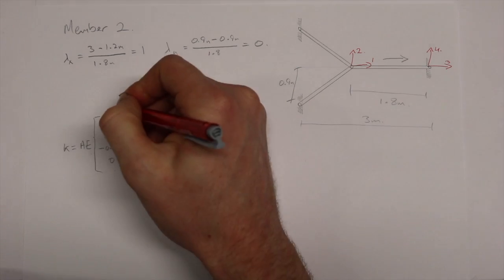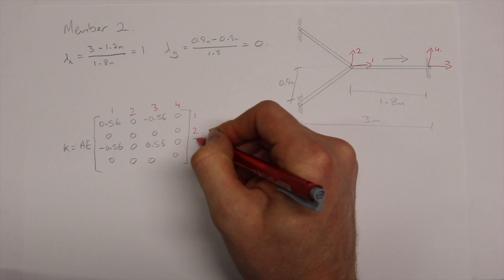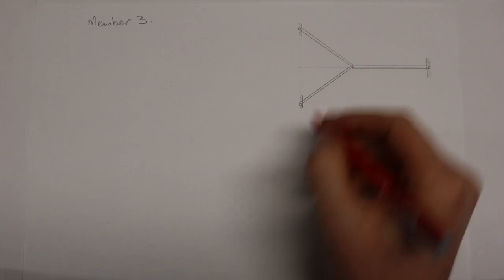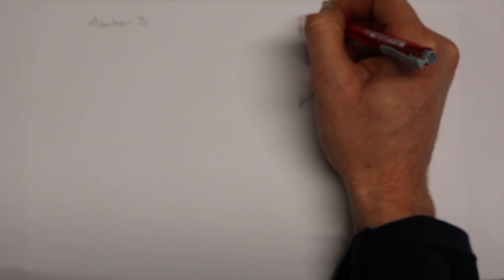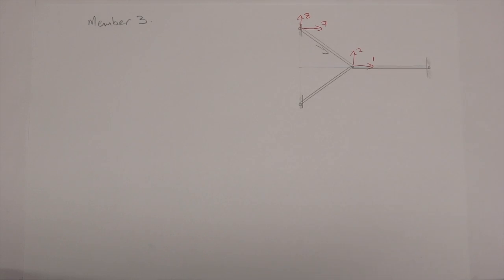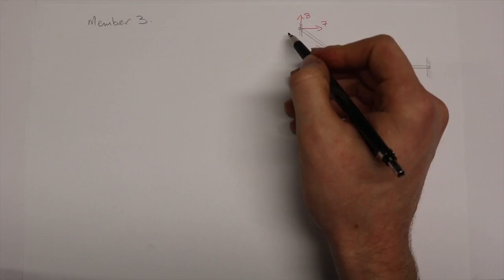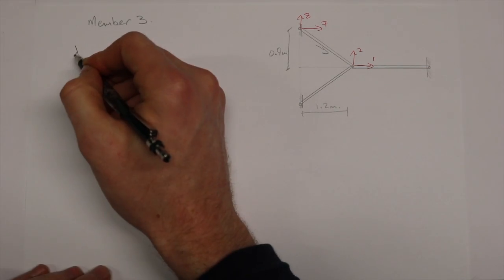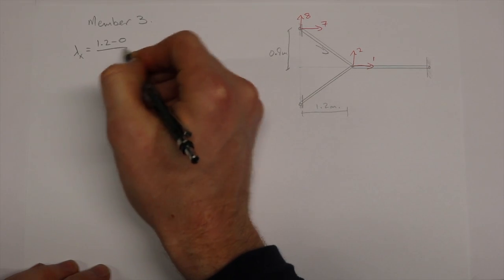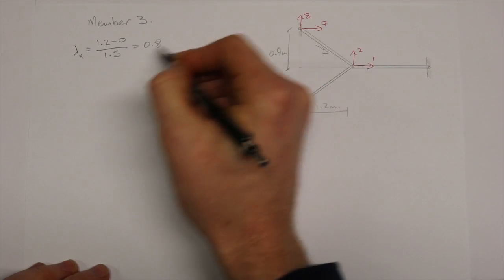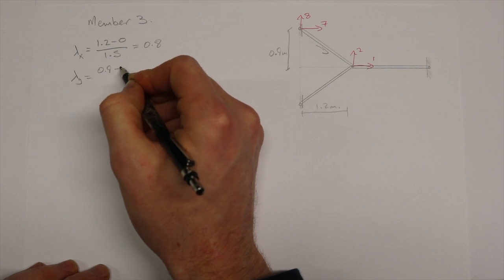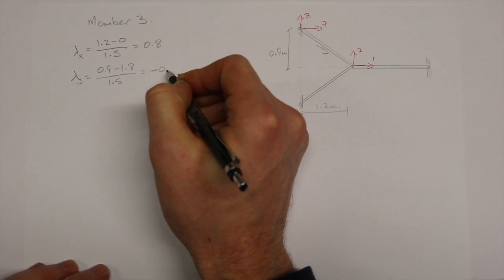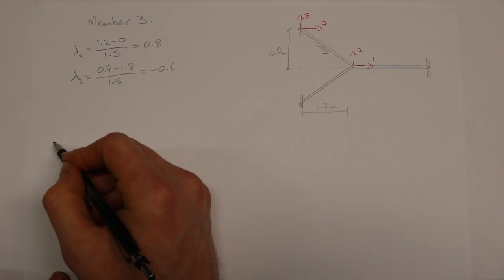Now the same procedure once again for member 3. Note here that our lambda y value is negative, so just watch the signs when creating the matrix.